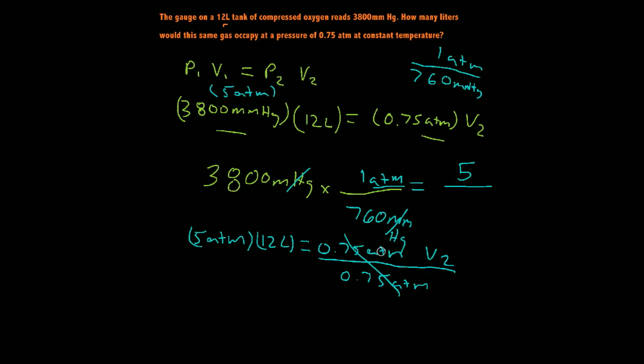So that way my 0.75 ATM will cancel out. On the right, bring it over here, 0.75 ATM. And that's going to equal my V2.